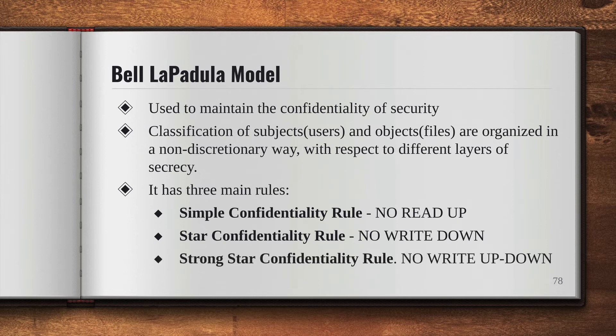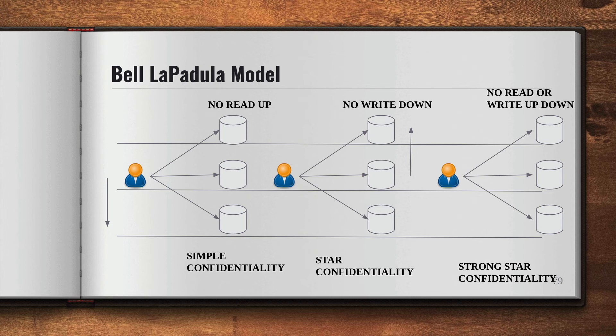The last rule is the Strong Star Confidentiality Rule, which states that you can do both reading and writing, but only on the same level of secrecy. The subject cannot read and write on the upper level, and cannot read and write on the lower level — only on the same level.